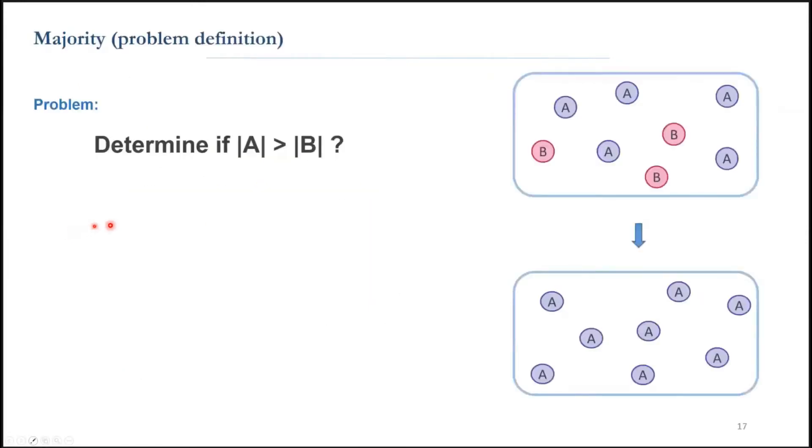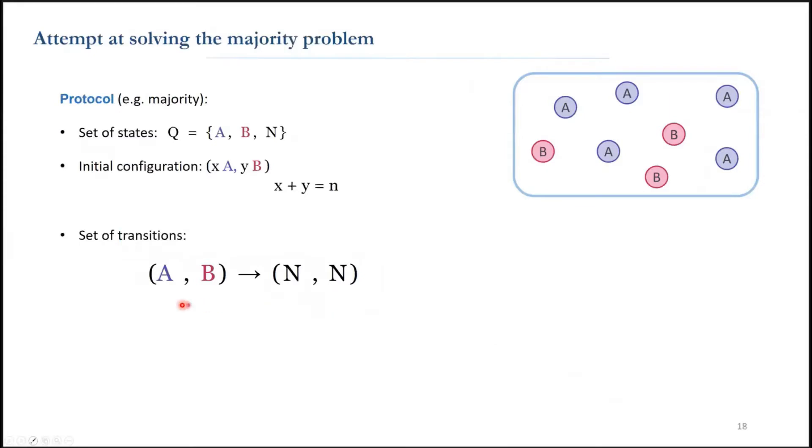But what is the majority problem? Starting in a configuration that every agent has a vote, either a or b, we want the agents to determine if there are more a's, more b's, or even if it's a tie.